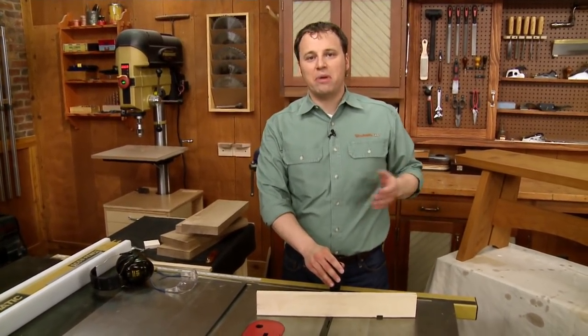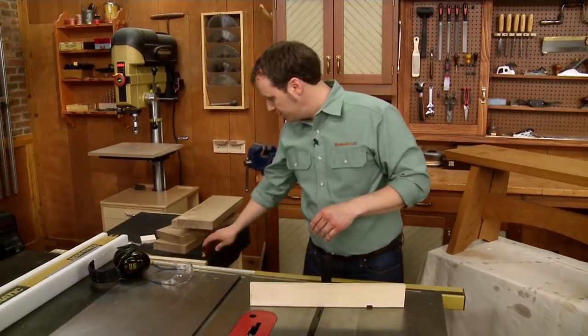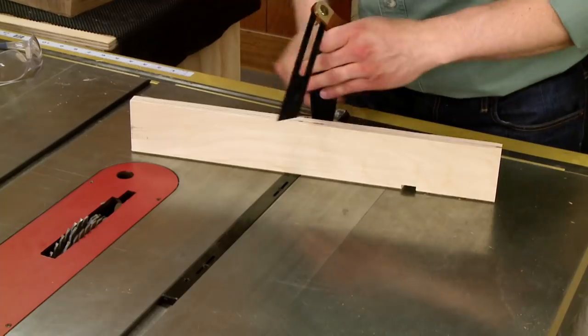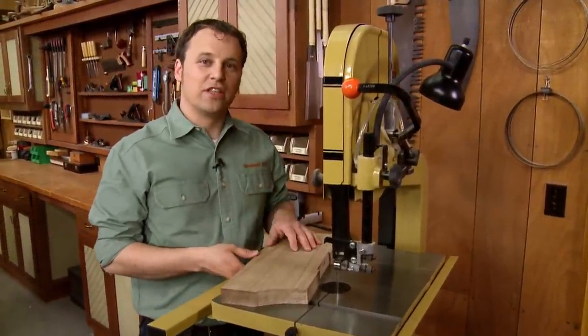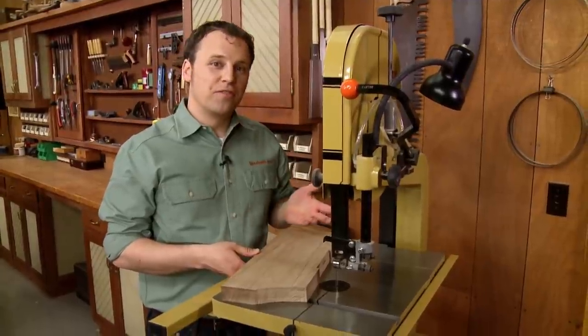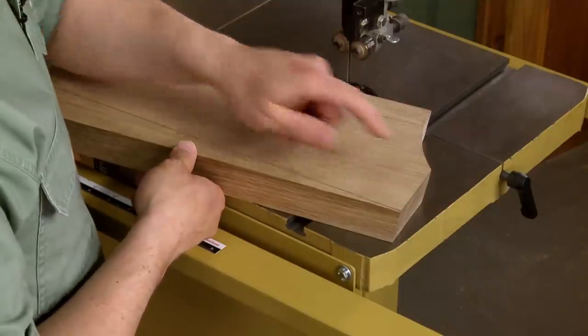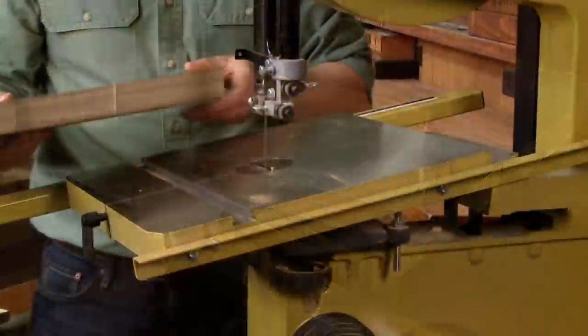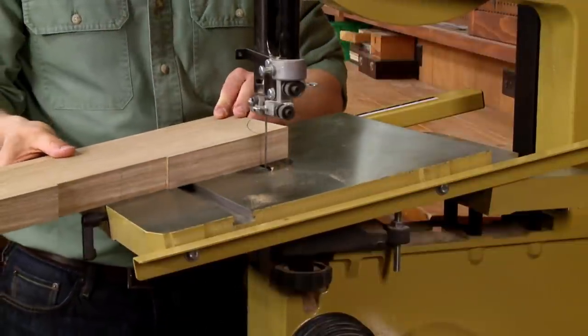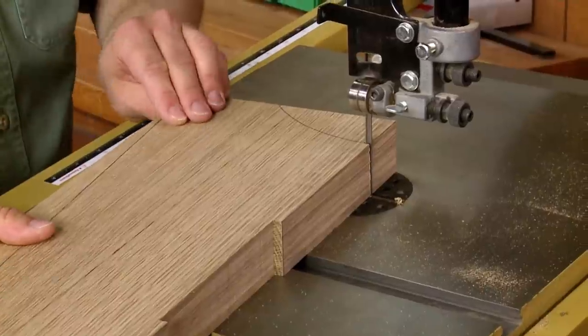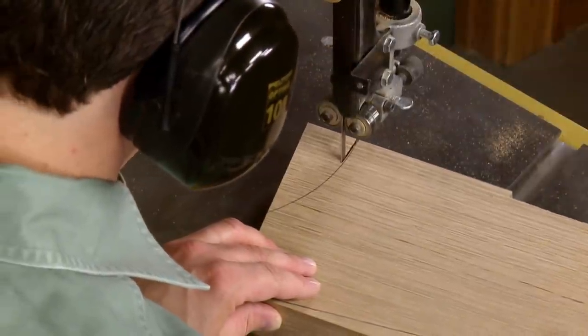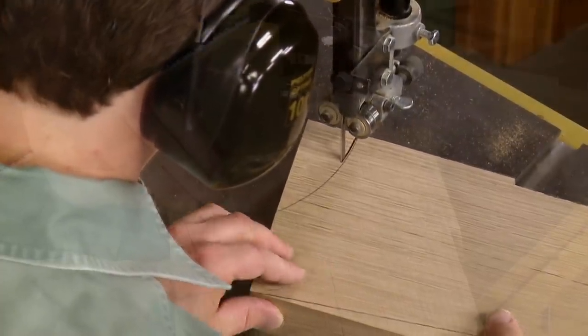Once that's done, I'm going to head over to the band saw and finish up the legs. There are just a couple other details to take care of on the legs, and I can do that here at the band saw. The first of these is to cut an arc on the bottom of each of the legs. To make the cut, I tilted the saw table to match the angle at the top and bottom of the leg. Then make a smooth, even cut, staying just to the waste side of the layout line.